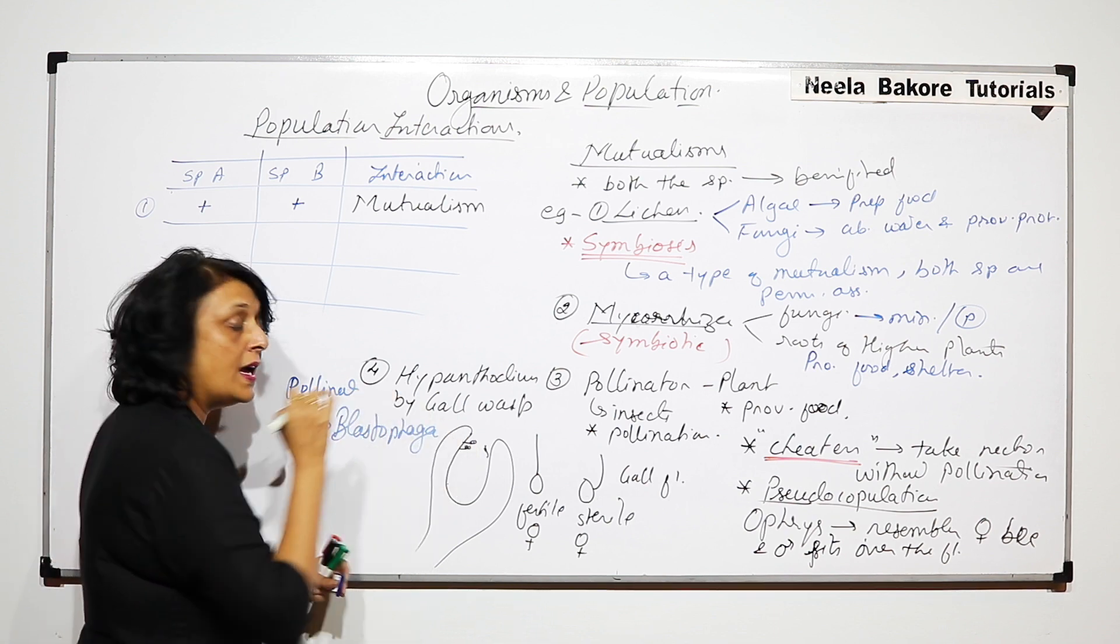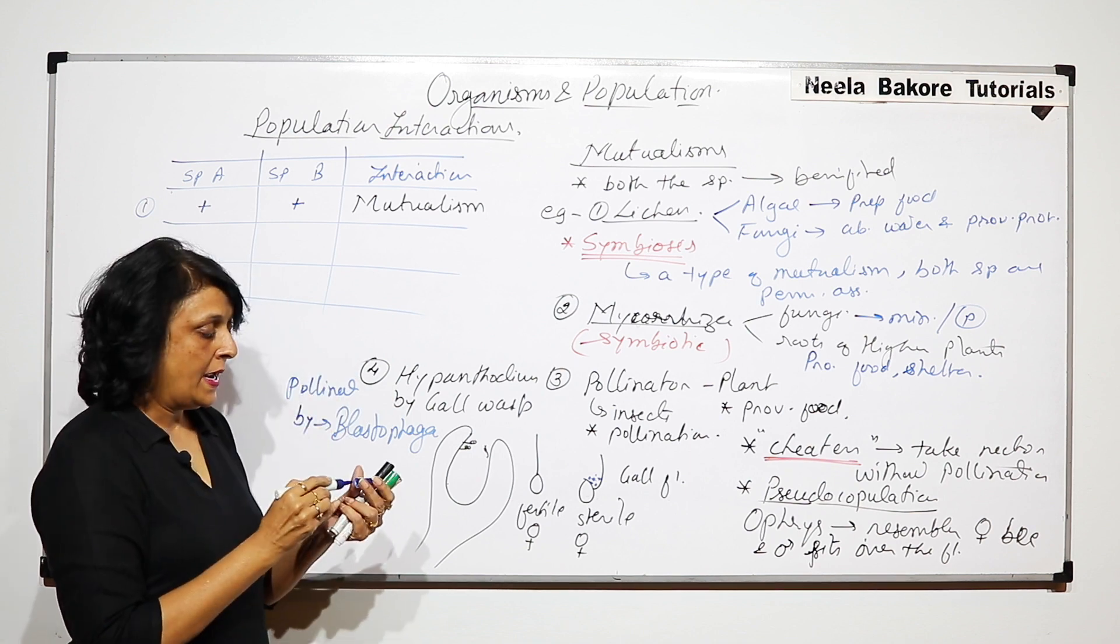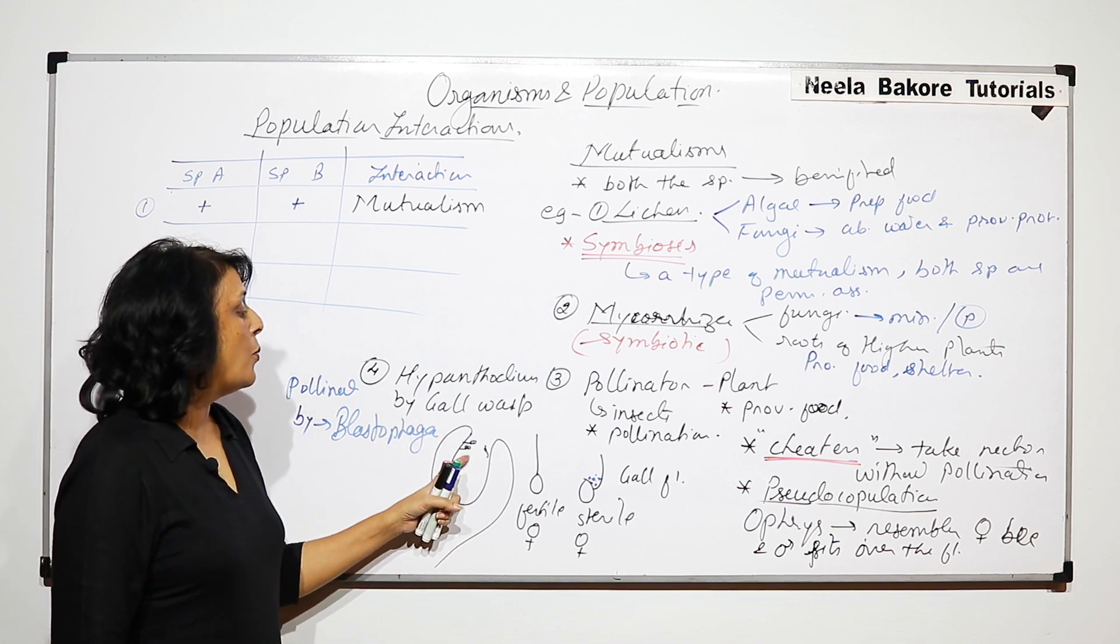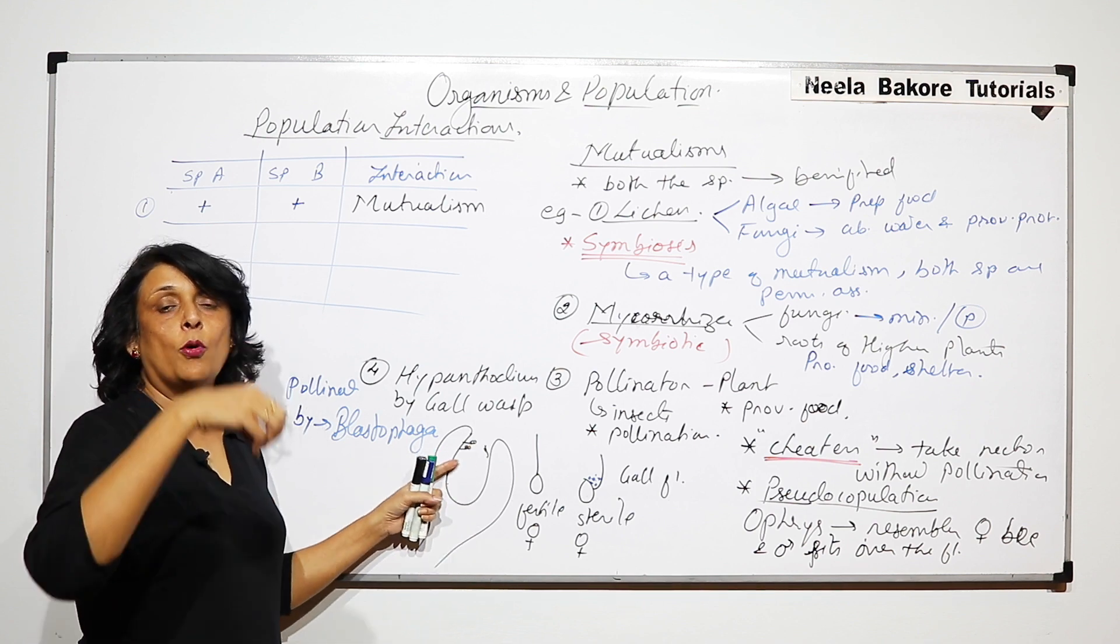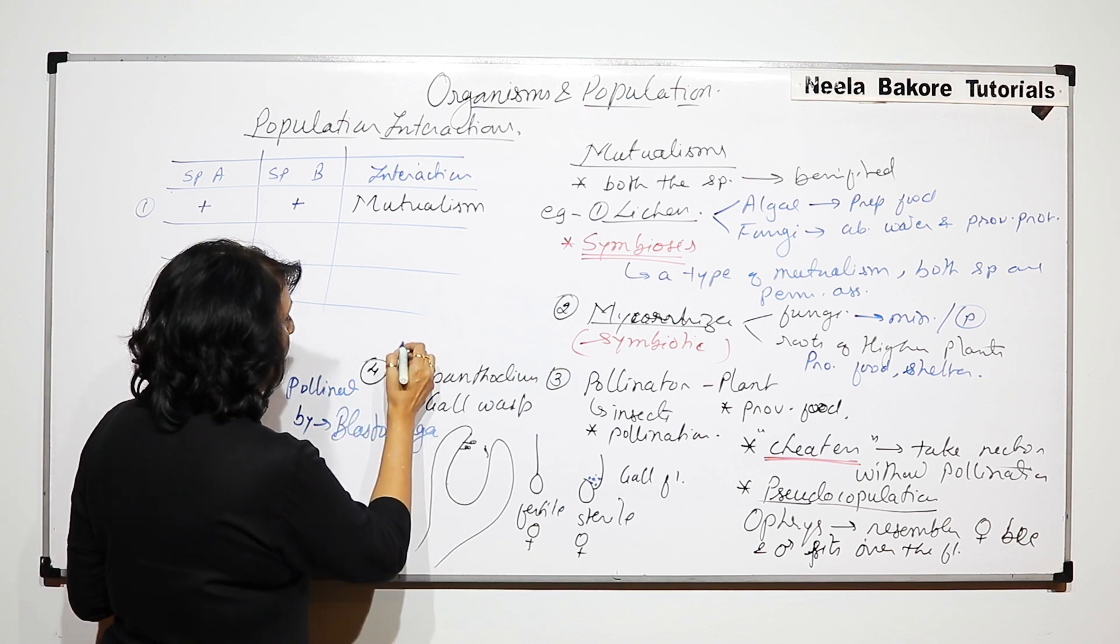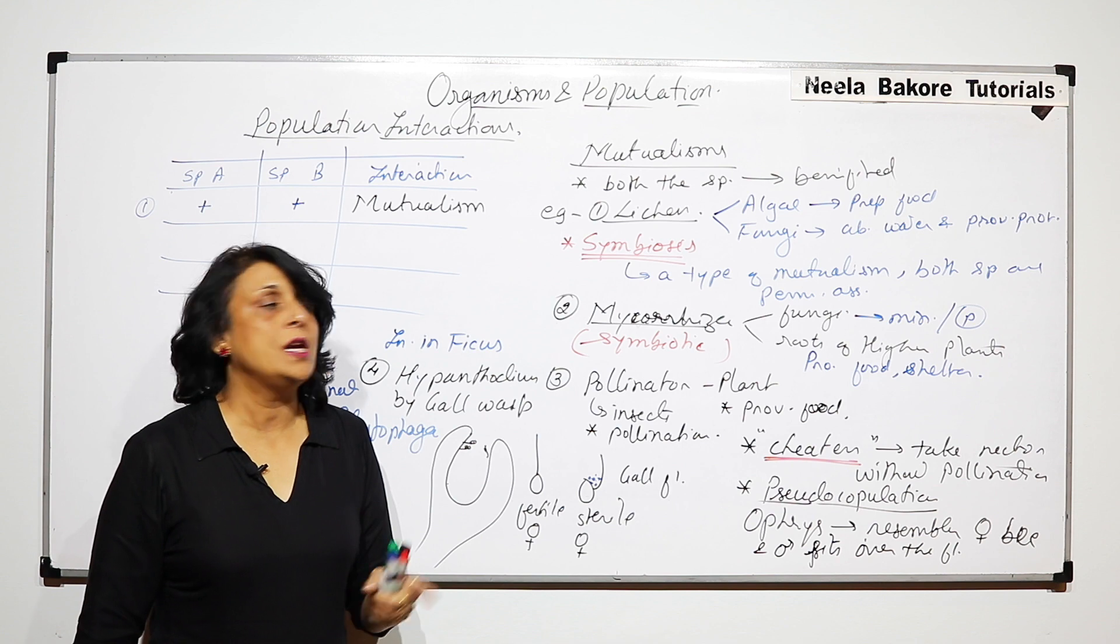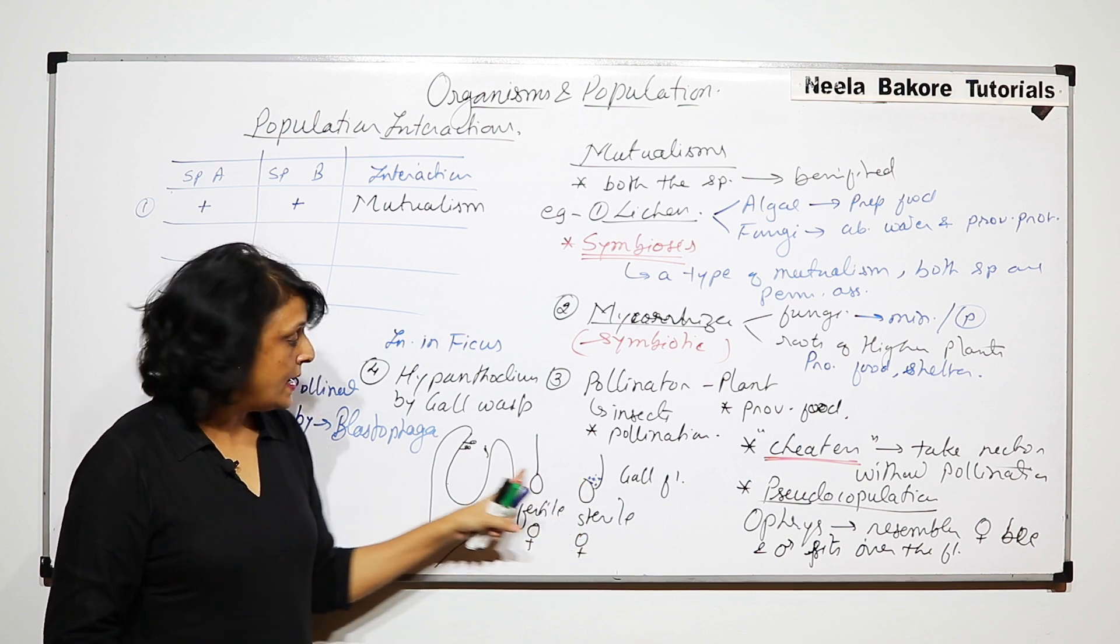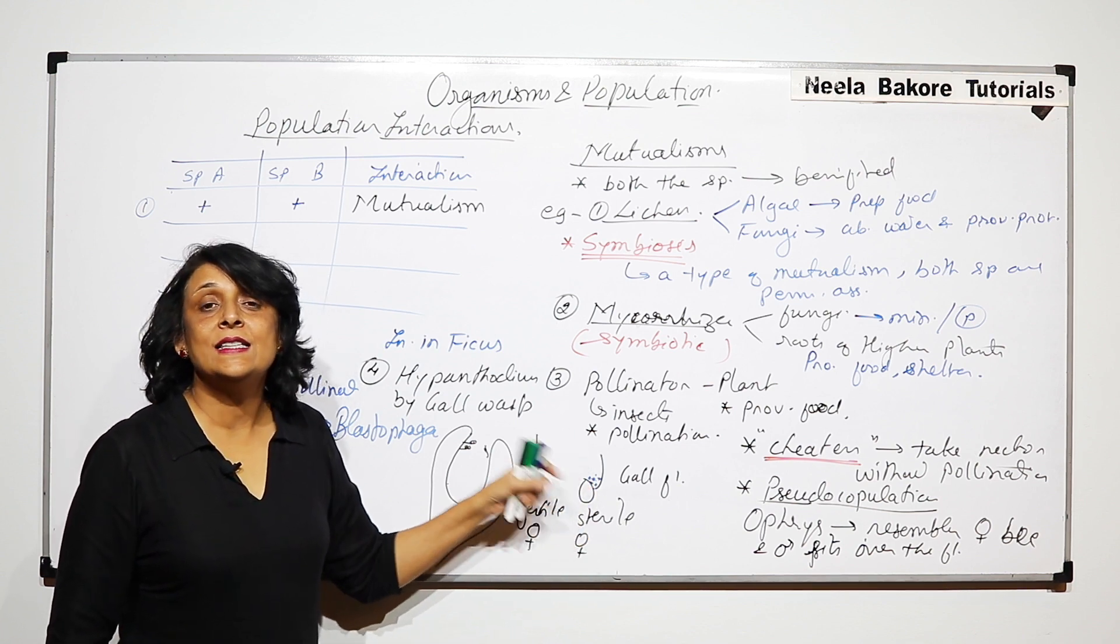Now, the pollination takes place by blastophaga. Now, this blastophaga enters into this Hypanthodium, lays its eggs here and then goes out. Now, while entry and exit, the insect has to go through this narrow passage. So pollen grains are going to touch the body of the insect and when this insect or blastophaga enters another Hypanthodium, the pollens are going to fall. So the benefit which Hypanthodium gets, Hypanthodium is the inflorescence in ficus. That is fig or even banyan tree, ficus bengalensis, ficus carica. So when it lays its eggs here, it goes in and out and helps in pollination.